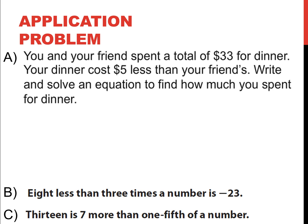So, we're going to leap directly into an application problem for this one. You and your friend spend a total of $33 for dinner. Your dinner costs $5 less than your friend's. So, we're going to write and solve an equation to find out how much you spent for dinner. This is a lot of information to unpack. And the first thing is we don't know how much our friend's dinner costs, so that's going to be our variable x. x equals our friend's dinner.